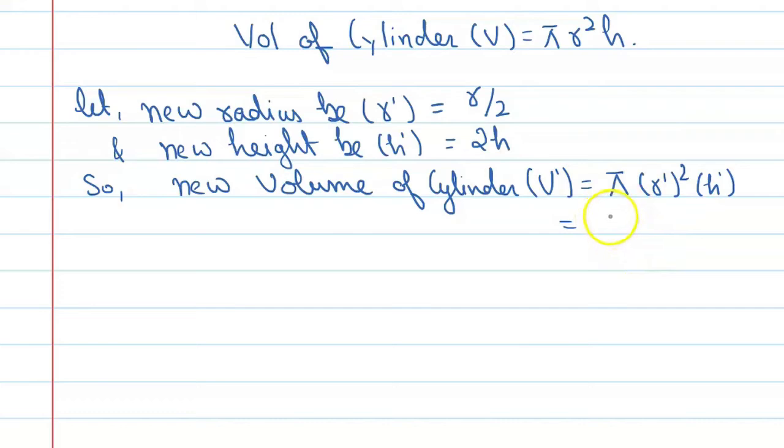So this is π r prime means r upon 2 squared, and this is h prime means 2h. So from there we will get π r² upon 4 into 2h. So you can see this 2 and this 4 will get cancelled and we will get 1 upon 2 π r² h.